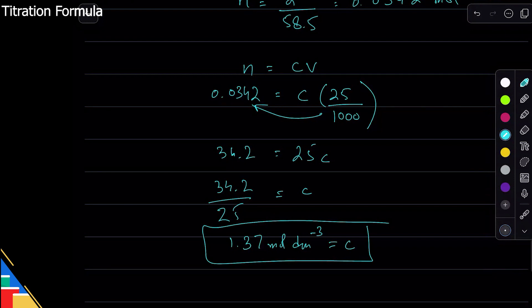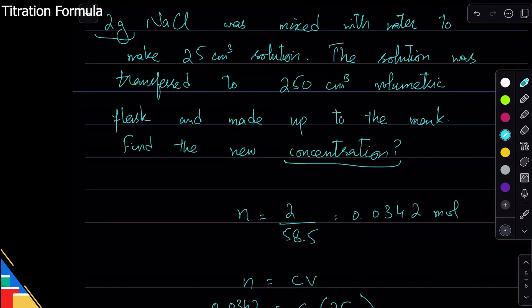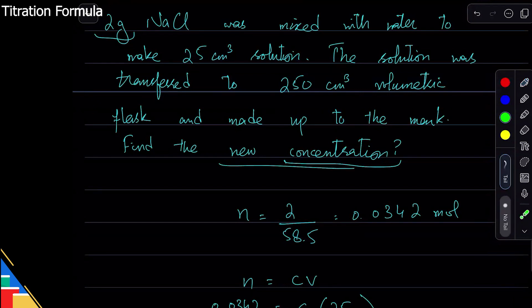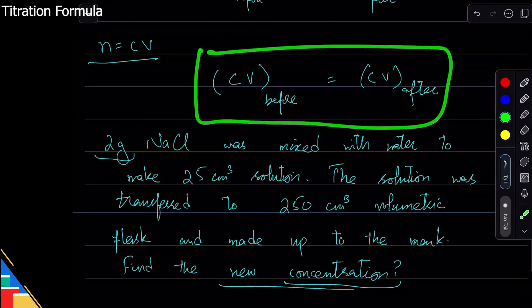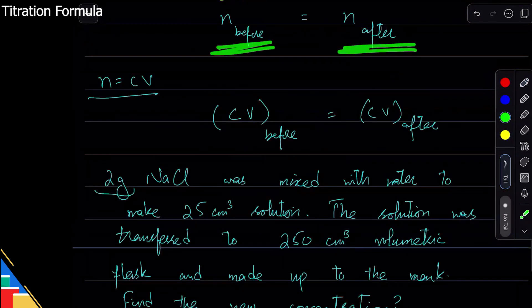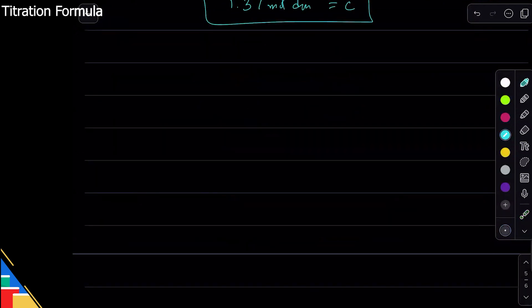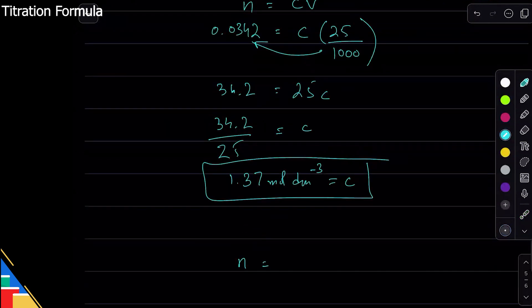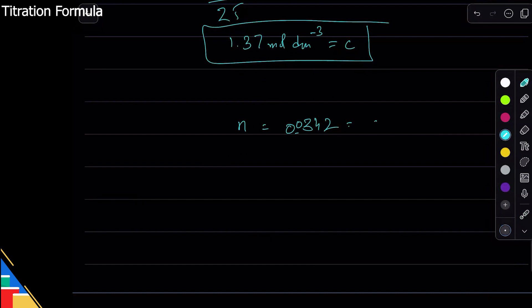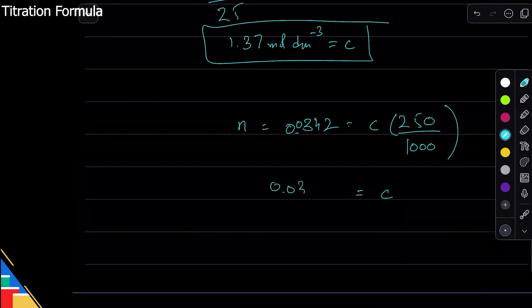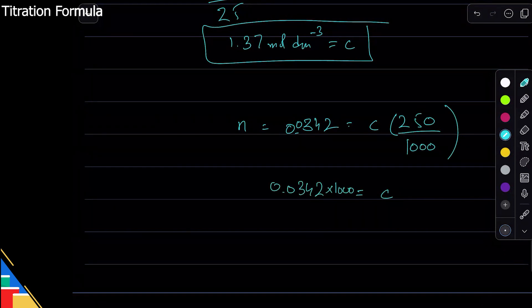Now here's the thing - do we need to know that? No, because in the question they said find the new concentration. I can use this method: number of moles before is equal to number of moles after. What is my number of moles before? It was 0.0342. And what's the number of moles after? C times the volume afterwards is 250 cm³. So I can simply find 0.0342 times 1000 equals C times 250. So C equals 0.0342 times 1000 over 250.